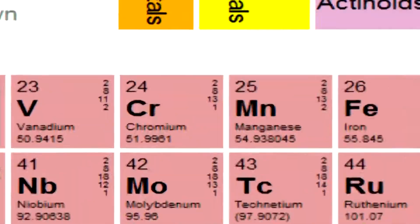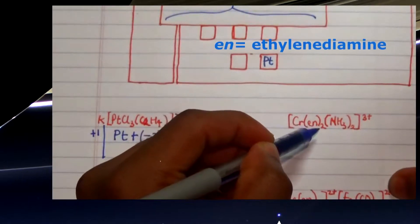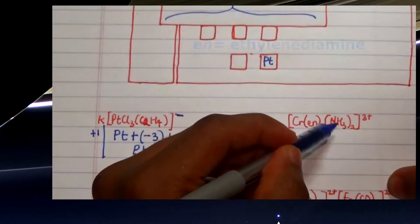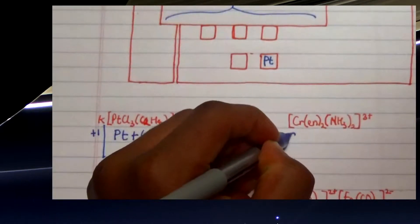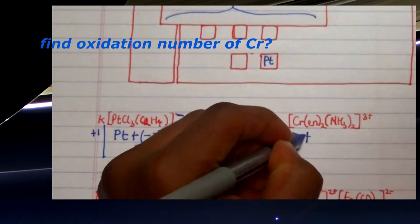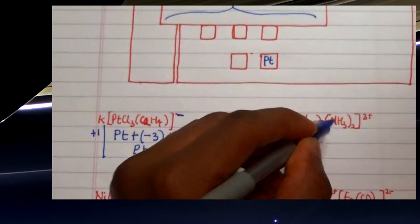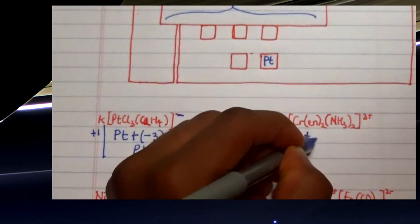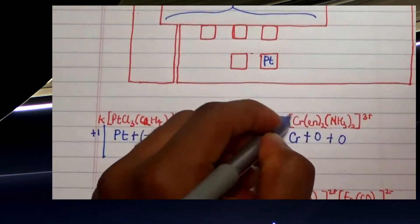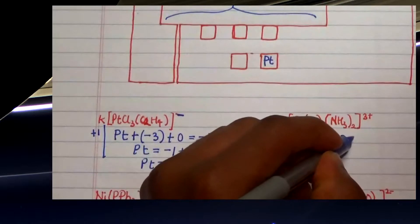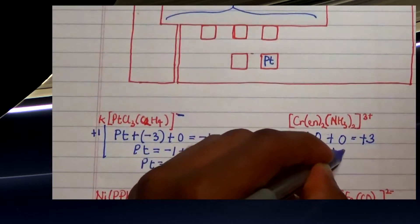The second example looks at chromium coordinating with a bidentate ligand and two ammonia molecules, with an overall complex charge of positive three. To find chromium's oxidation state, we note that the bidentate ligand is neutral and ammonia is also neutral — both have zero charge — so chromium itself must carry the full +3 charge.